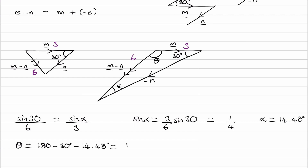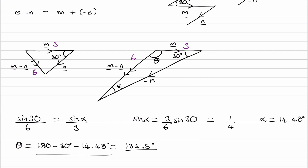This gives us theta equal to 135.5 degrees. That's our final answer, using the fact that all angles in a triangle add up to 180 degrees.